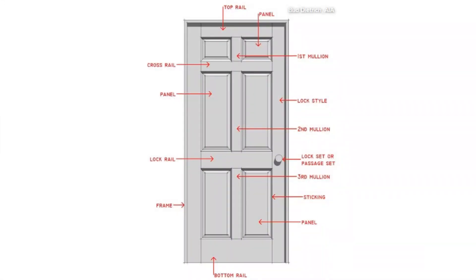Before going to section and elevation, we will see the important parts of a paneled door. This is a single paneled door. This part is called the top rail - the top horizontal portion. It is called the top rail of the door. Similarly, you will have a bottom rail - that is the bottom horizontal portion, called the bottom rail.